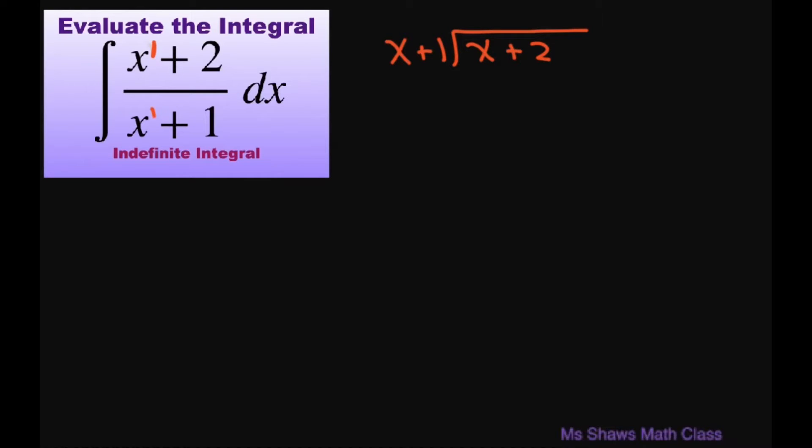Using polynomial division, 1 times x plus 1 gives you x plus 1. Then you're going to subtract both terms. So that's going to give you 0 there and that's going to be minus 1. So we're going to have minus 1. Oh, that's going to be plus 1, plus 1 divided by your x plus 1.